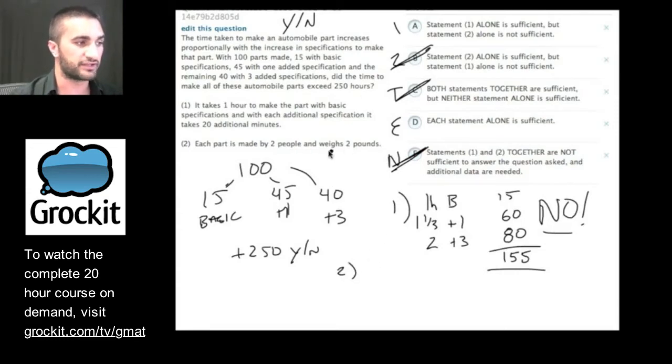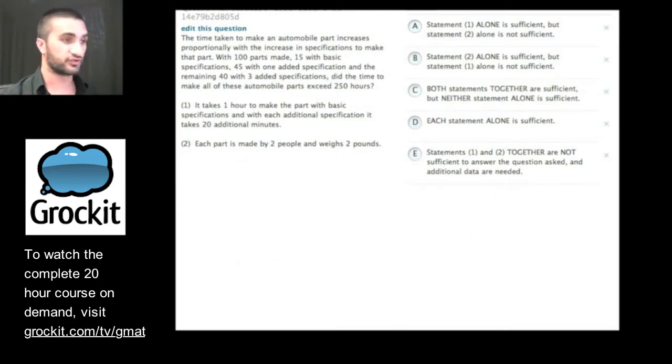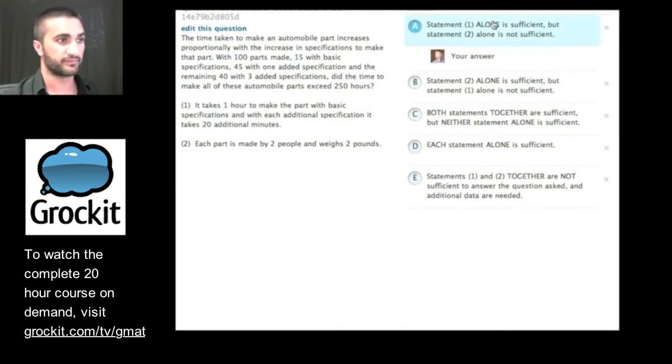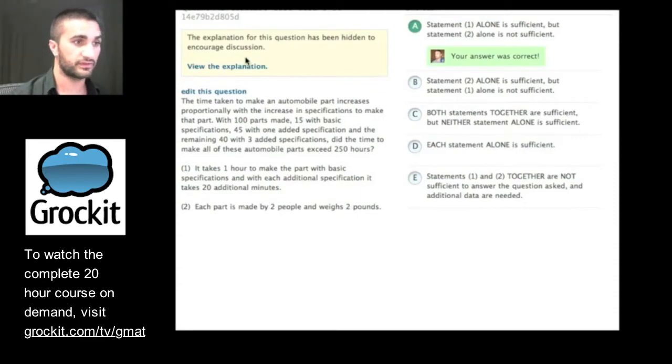And now we have the second statement to evaluate. Each part is made by two people and weighs two pounds. Well, we're trying to figure out how many hours it takes. So this is never going to get us at that number. So this is not going to give it to us. Statement one alone should be sufficient. Let's pick it and see what happens. Nice. Correct. We did a great job there.